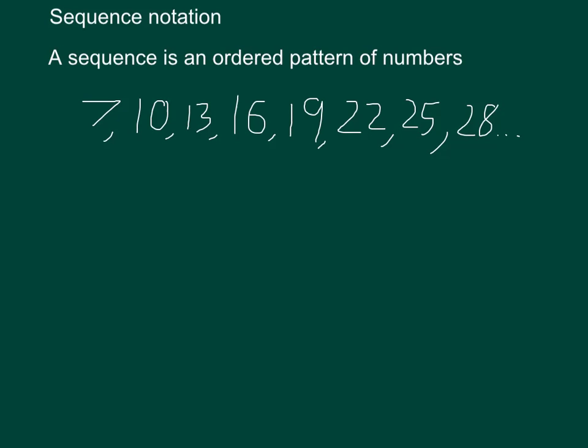A sequence is essentially just a pattern of numbers, like the one that you see here. We use a certain notation to allow us to describe and refer to specific things in the sequence.